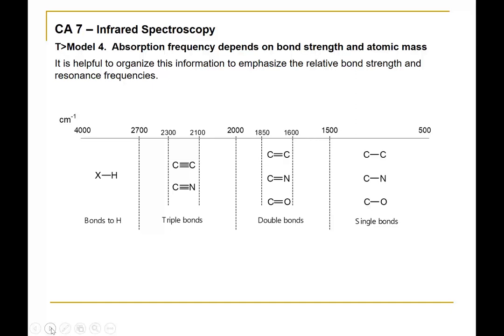Bonds to hydrogen often occur in the region of 2,700 to 4,000 wave numbers. Although this is a single bond, it involves an atom of very small mass, which is why it occurs in that higher region. You will have charts available to connect functional groups to specific wave numbers, but it's still helpful to have a sense of where to expect absorbances corresponding to particular types of bonds.